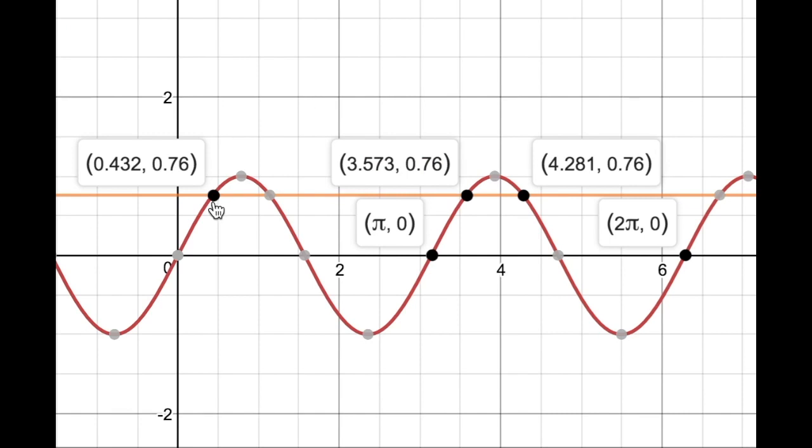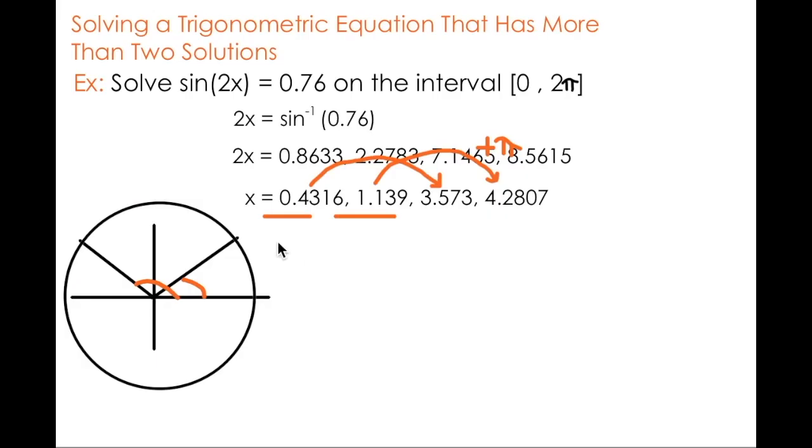Picture that I start at 0.432 and I go through one full cycle in π. That will take me to my second solution of 3.573. Likewise if I start at 1.139 and I go through one full cycle of π, that should take me to 4.281. And from there I produce four solutions that will satisfy this equation.